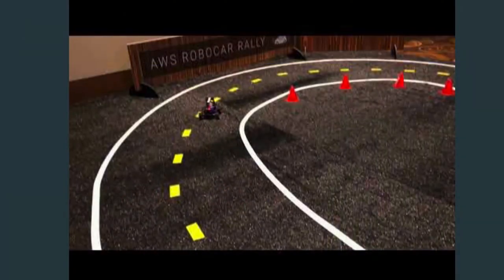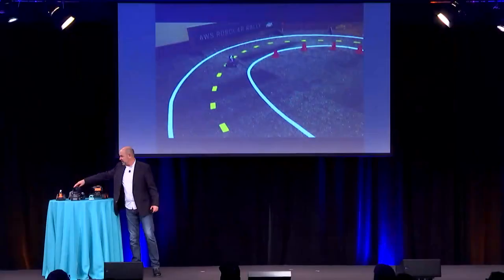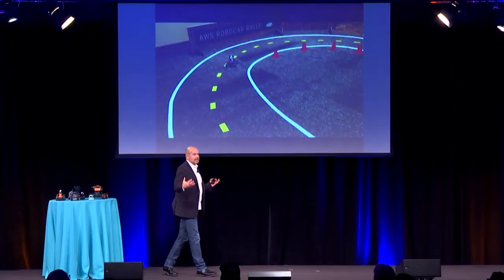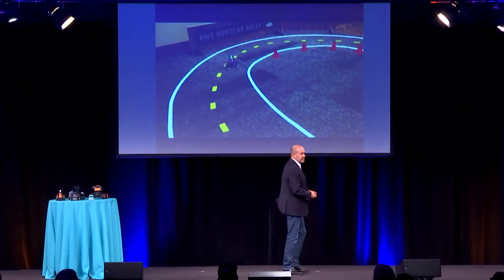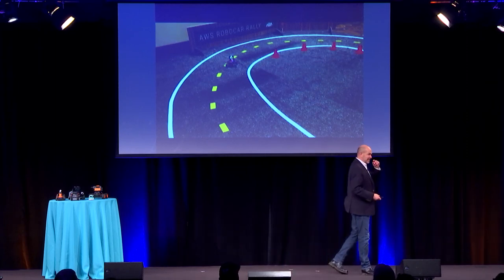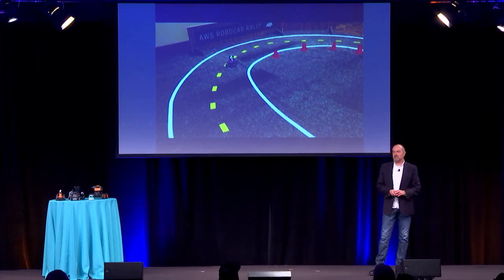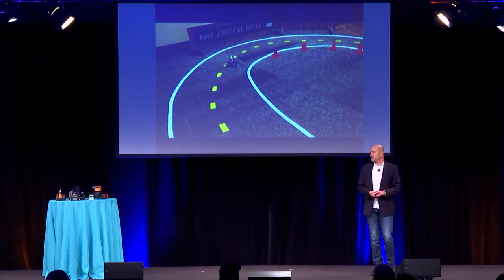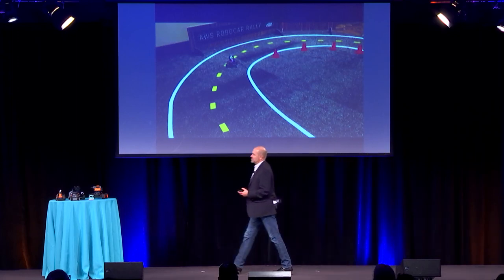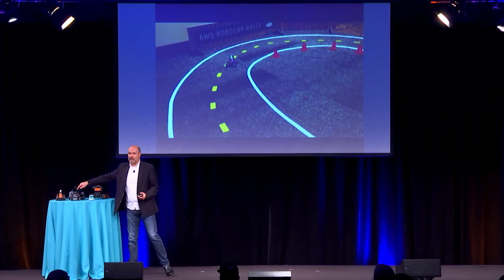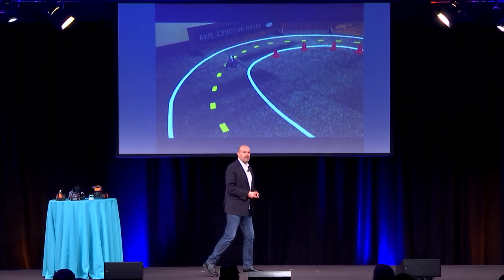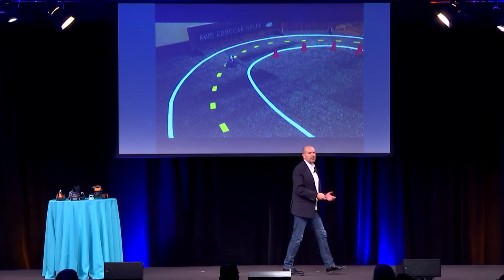This week at AWS re:Invent in Las Vegas, Amazon has released their own version of a DIY robocar called the AWS DeepRacer, and they are using this to teach AI, machine learning, simulation, et cetera. They have a series of tracks and races, and they've even introduced a new version of the car that has LiDAR. All the big tech companies are now embracing this as a great way to teach and to get hands-on experience.